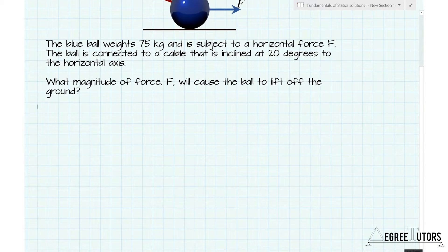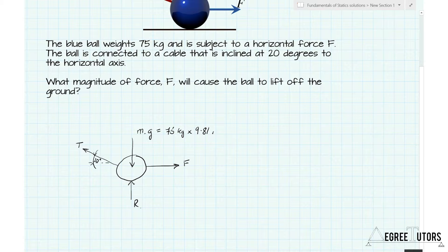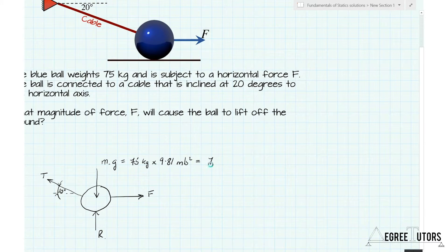The very first thing to do is to do a free body diagram. So we'll just sketch this out nice and quickly. We've got a ball, very straightforward. Now what's not shown in the top diagram is the fact that that ball is experiencing a reaction force from the ground on which it's sitting. We then have a force F which is the applied force, and then when we cut that cable we'll reveal an internal tension force within the cable so we're going to label that T, and recognize that that is at an angle of 20 degrees to the horizontal. The other force we have acting on the ball is its own self-weight, which is essentially the product of its mass times the acceleration due to gravity, which is going to be 75 kilograms times 9.81 meters per second squared, which will give us 735.8 newtons.